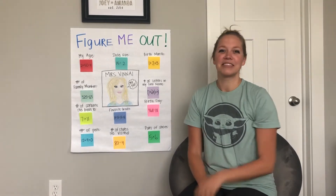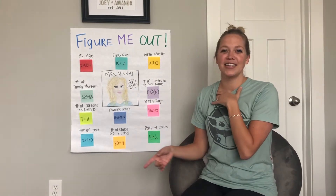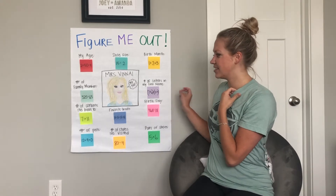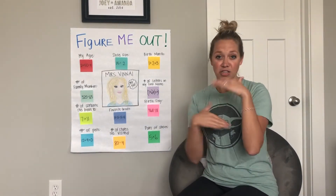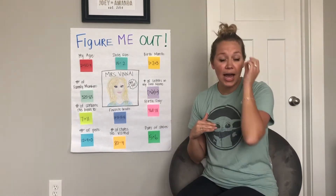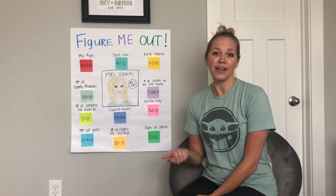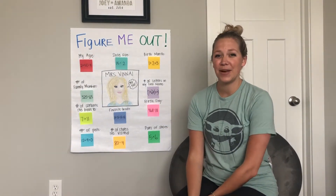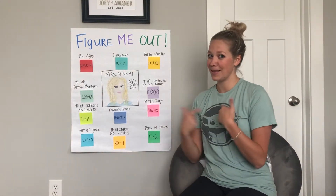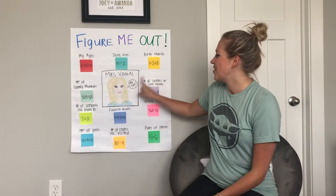So basically what we have here is a 'Figure Me Out.' You can create one on a big poster board like this, on a sheet of paper, on a Google Slide, or on a Word document. If you choose to do it electronically, that would probably be a really easy way to send it to us as well. Or you could record yourself with your poster, kind of like I'm doing here — recording myself with my phone and showing you my Figure Me Out.